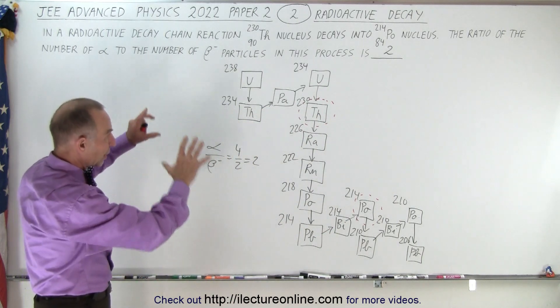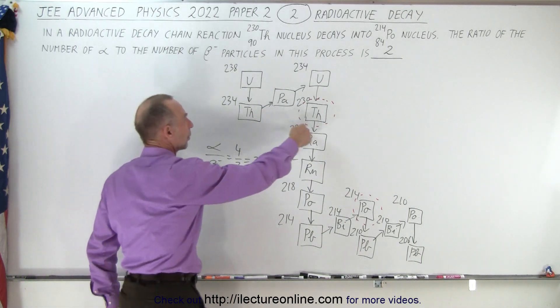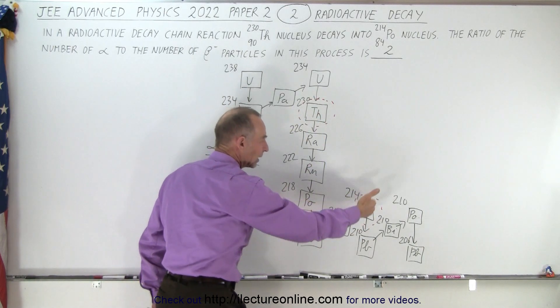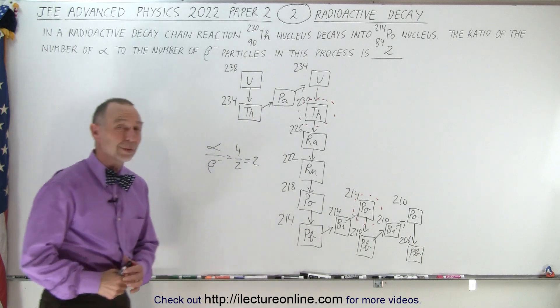So you have to memorize this chain, realize that this is the one they started with, this is the one they ended with, four alpha decays, two beta decays, four divided by two is two, that's the end.